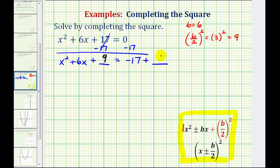So now we're going to factor this trinomial and combine the terms on the right. So let's factor this into two binomial factors first. Notice the right side is going to be negative 17 plus 9, that's negative 8.